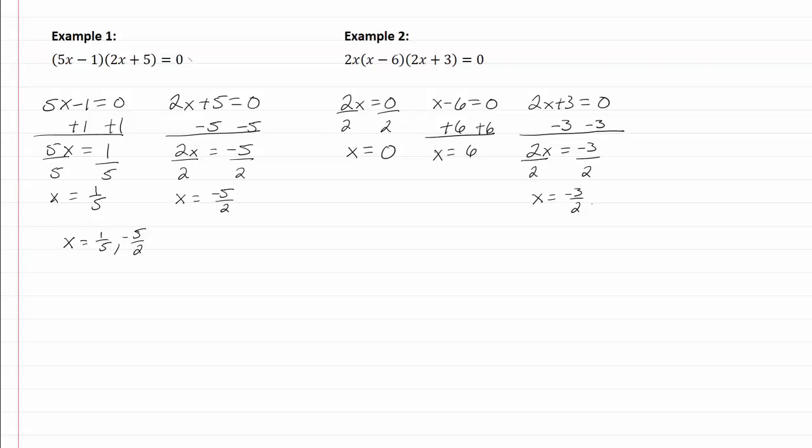Notice that I have three answers. I had three factors. If we had multiplied this out, we would have gotten 4x cubed for our first term. We're going to have the same number of answers as the highest exponent. If we had multiplied the first one out, we would have had 10x squared for our highest exponent and we had two answers there, three answers for this one. You're always going to have the same number of answers as the highest exponent.